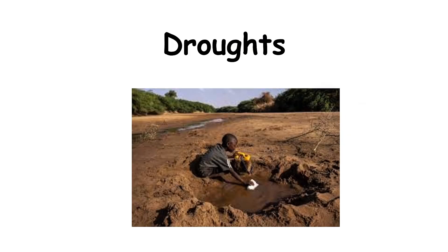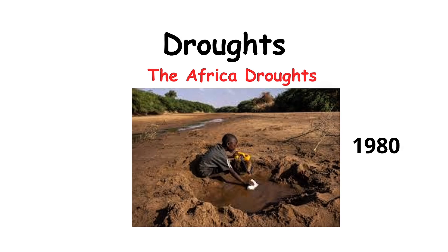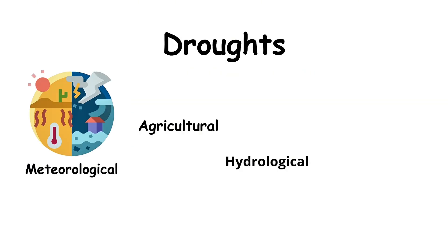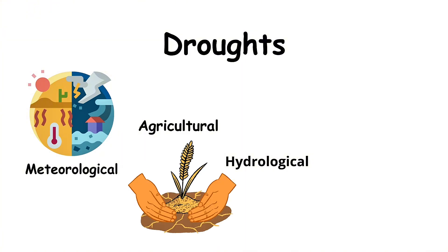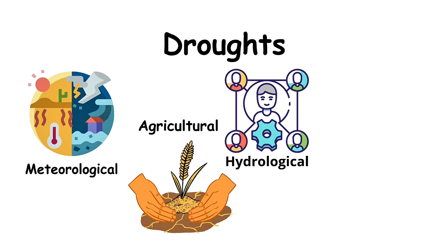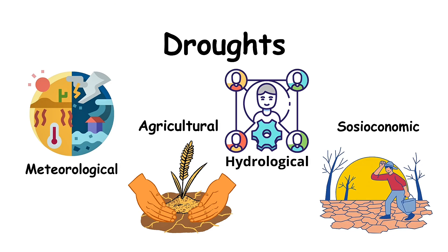One of the deadliest droughts in history was the African drought of the 1980s. Types of droughts include meteorological drought — caused by significantly less rainfall than normal; agricultural drought — when crops and livestock are affected due to a lack of soil moisture; hydrological drought — when rivers, lakes, and reservoirs run dry; and socio-economic drought — when water shortages begin to impact society, economy, and daily life. Droughts can lead to crop failure, food and water shortages, wildfires, and even mass migration. That's why water conservation, efficient irrigation, and long-term planning are vital to reduce the risks.